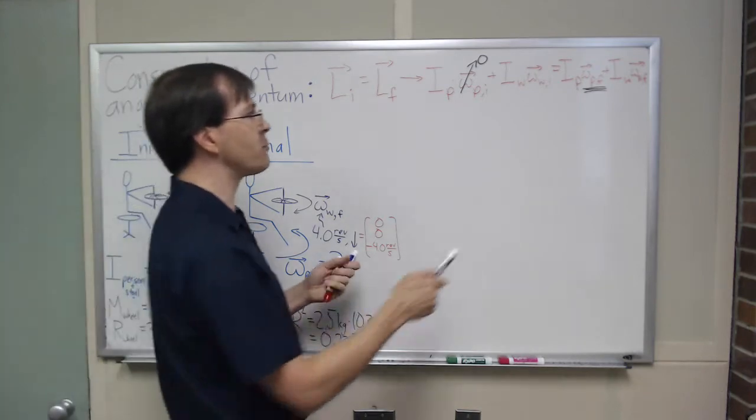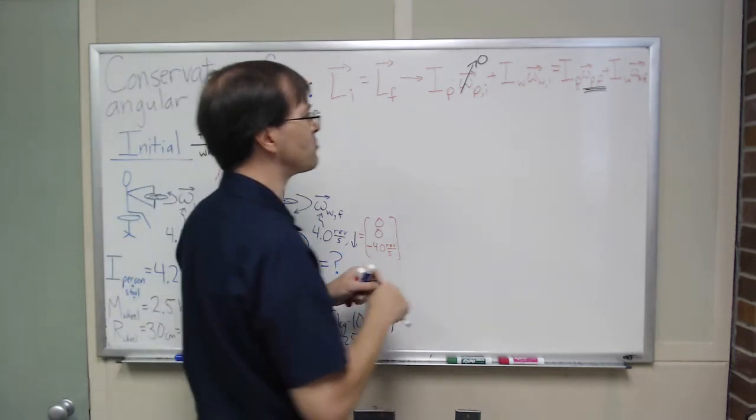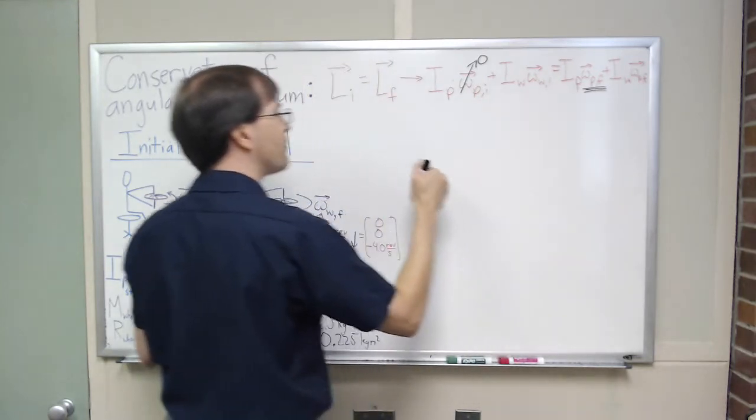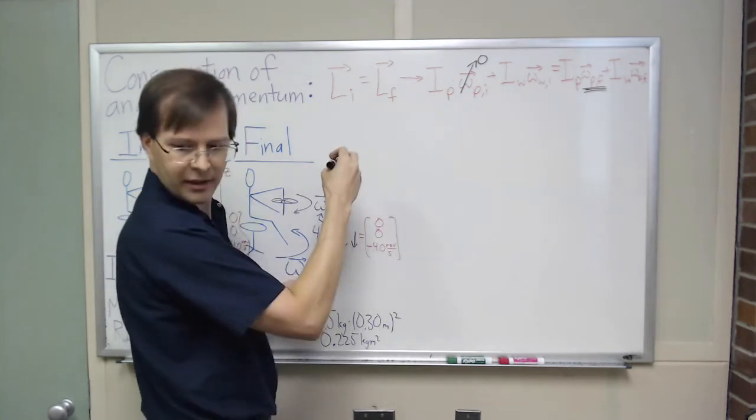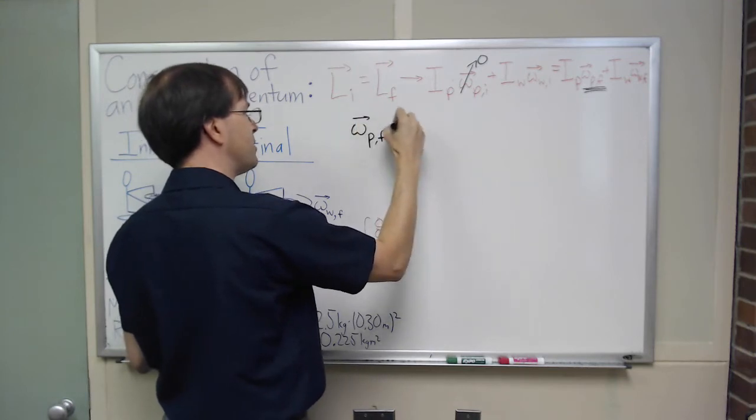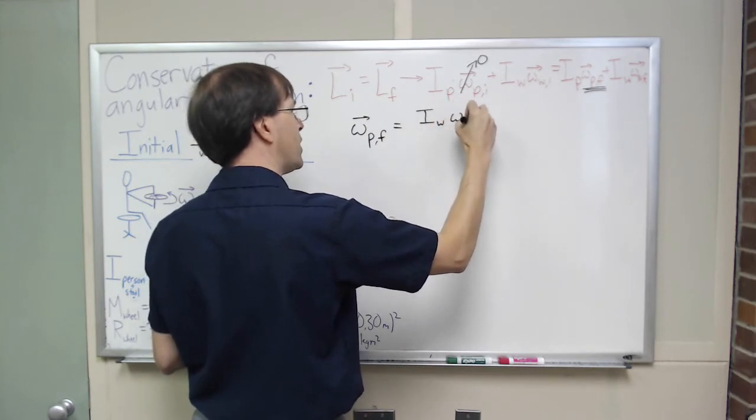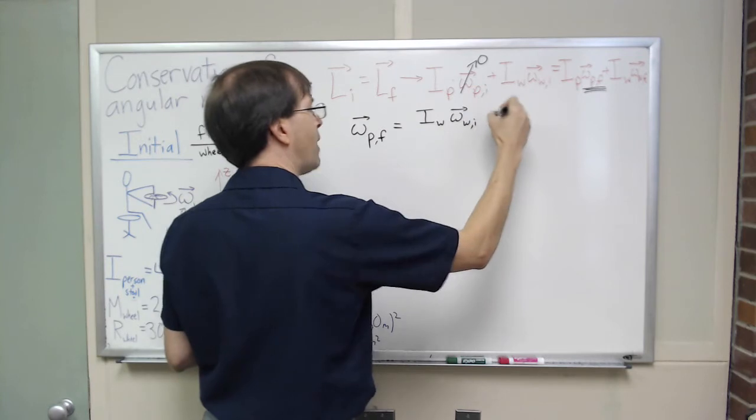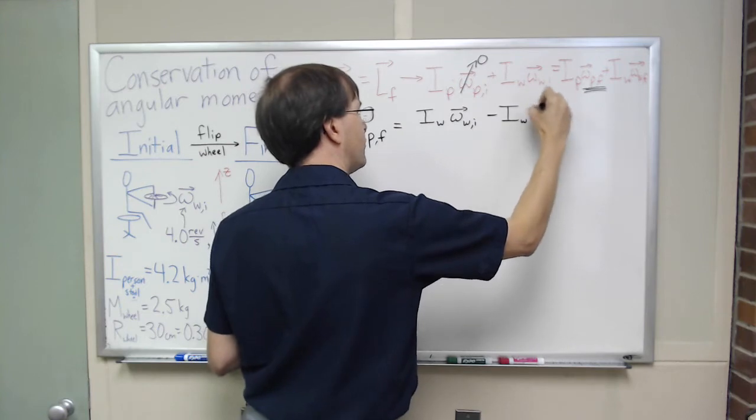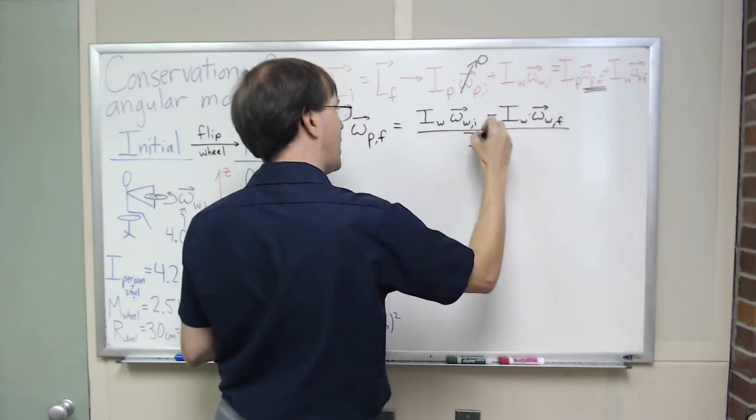So okay, point is, I've got all the pieces I need, I want to solve algebraically for omega person final. And to do that, I'm going to start by subtracting I omega for the wheel final from both sides, and then divide by I person. So, I'm going to find that omega person final is going to be equal to I wheel times omega wheel initial vector minus I wheel times omega wheel final vector, subtracting that from both sides, and then dividing by this coefficient, I person.